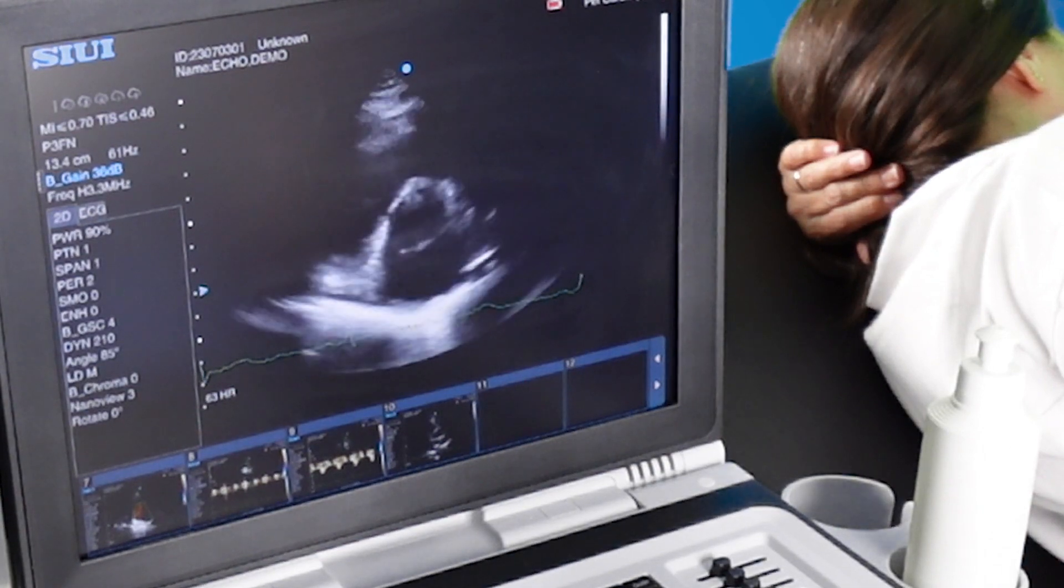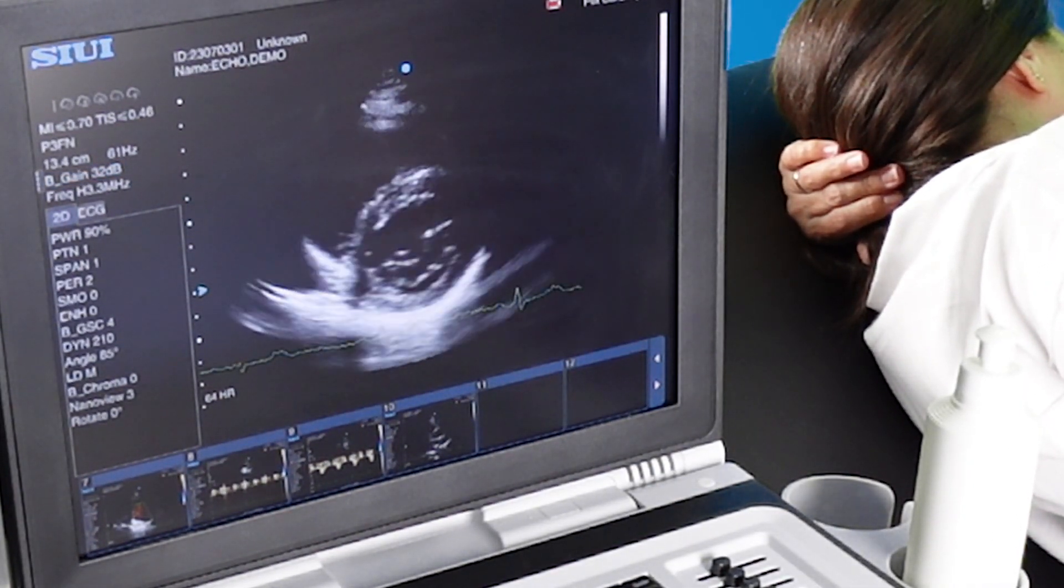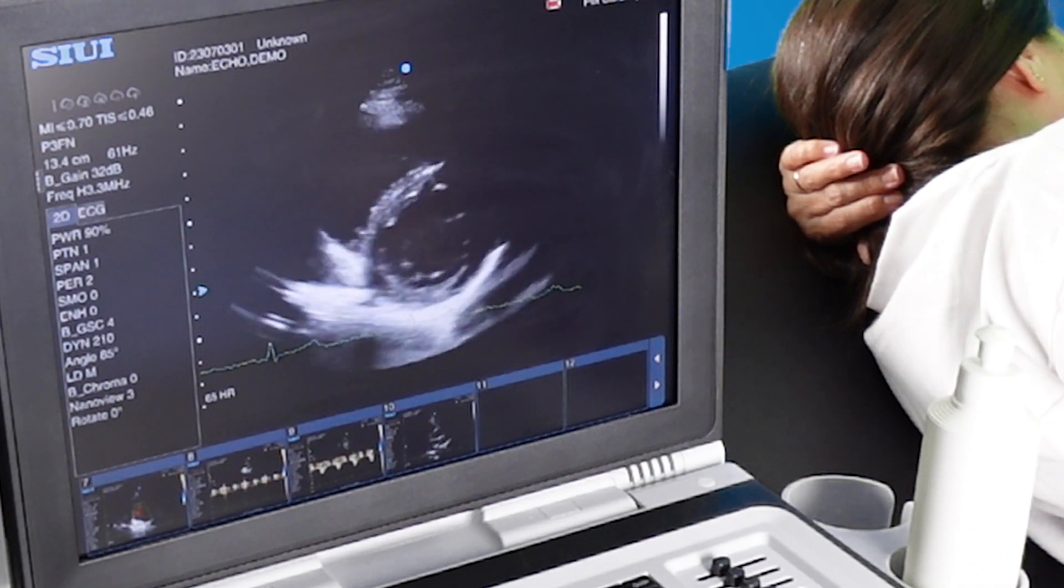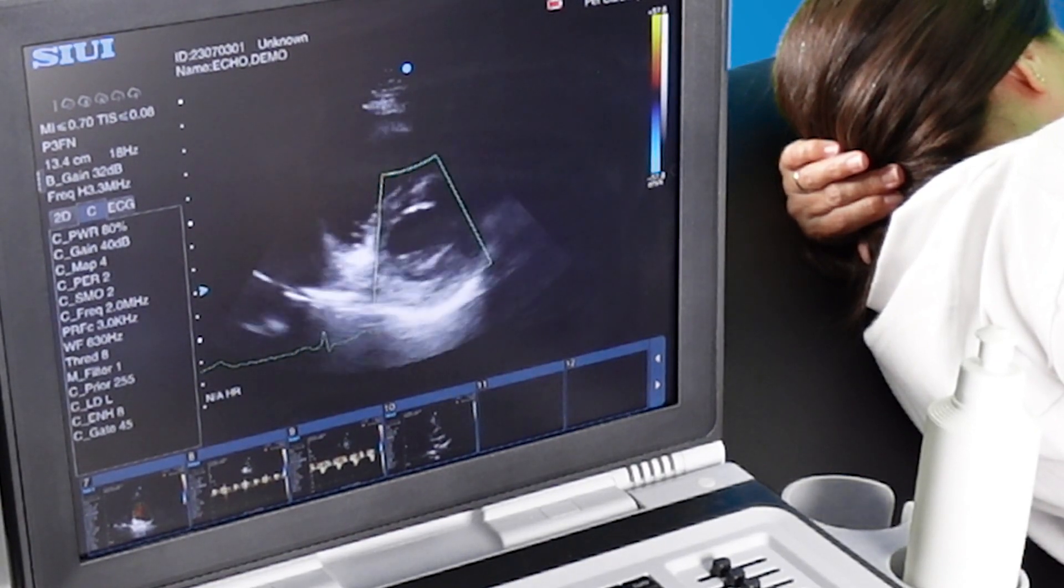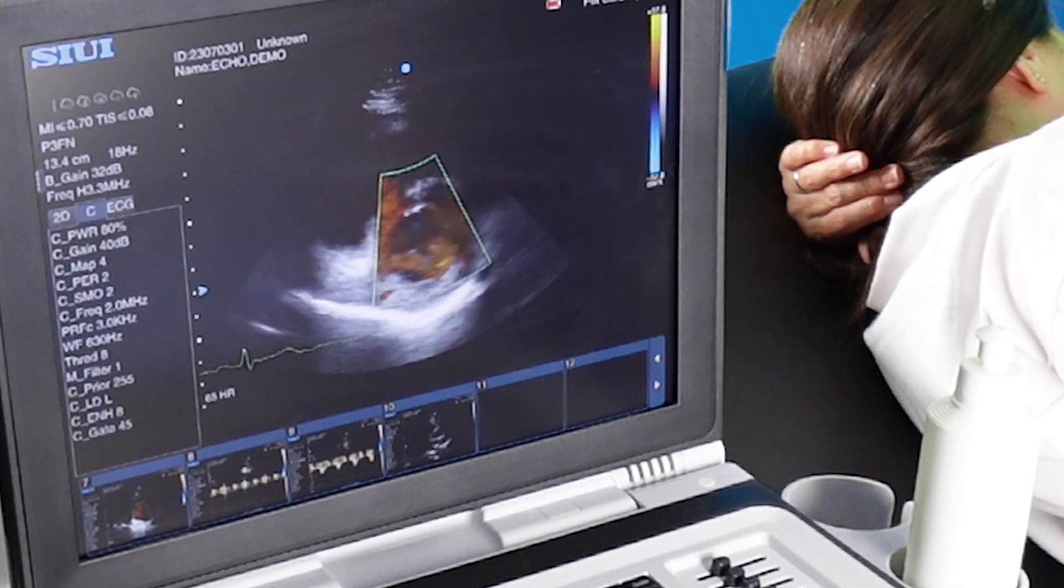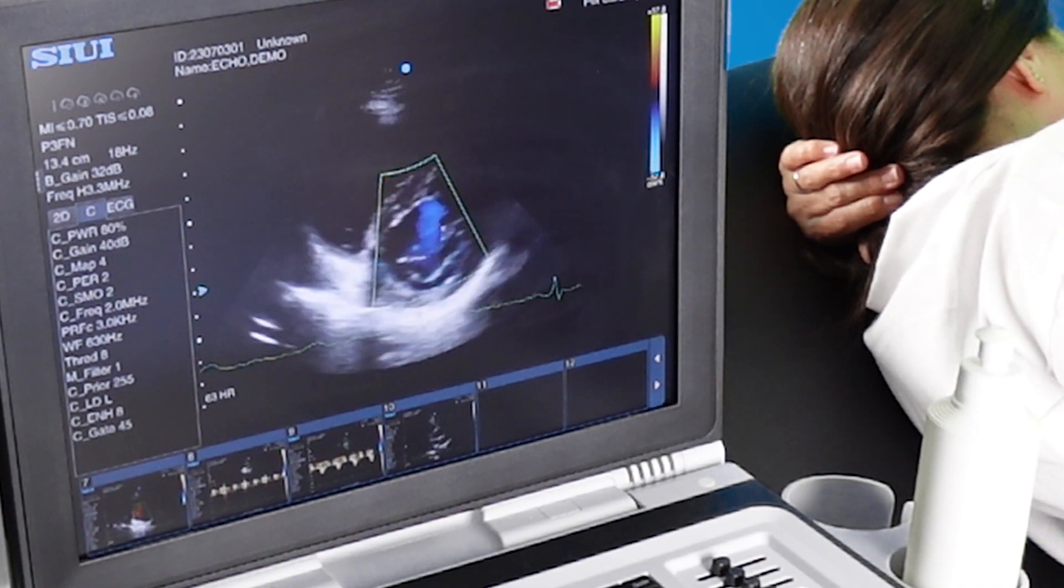So we're now at mitral valve level. Again with color Doppler over the valve, if there was regurgitation we would be able to see where along the valve this was arising.